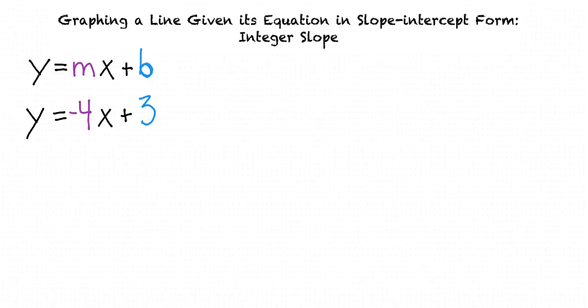Why is it called slope-intercept form? This is because when we write an equation in this form, m will always be the slope of the line and b is the y-intercept. So in this case, the slope is negative 4 and the y-intercept is 3. With this information, we're able to graph the line of the equation y equals negative 4x plus 3.